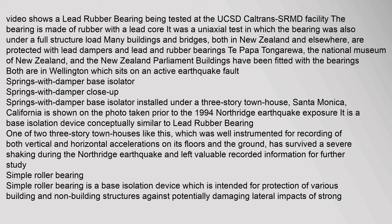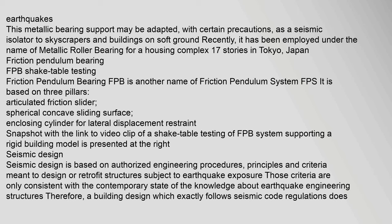A simple roller bearing is a base isolation device intended for protection of building and non-building structures against potentially damaging lateral impacts of strong earthquakes. It has been employed as a metallic roller bearing for a 17-story housing complex in Tokyo, Japan. Friction pendulum bearing (FPB), also known as friction pendulum system (FPS), is based on three pillars: an articulated friction slider, a spherical concave sliding surface, and an enclosing cylinder for lateral displacement restraint.